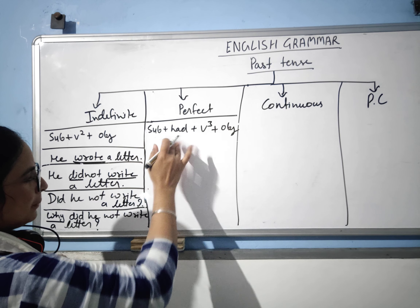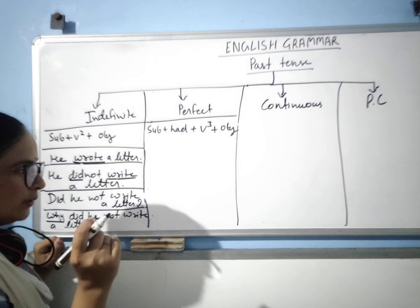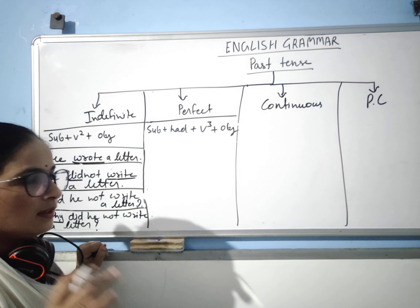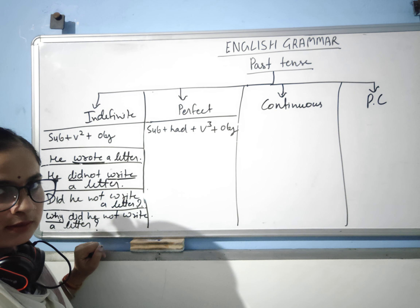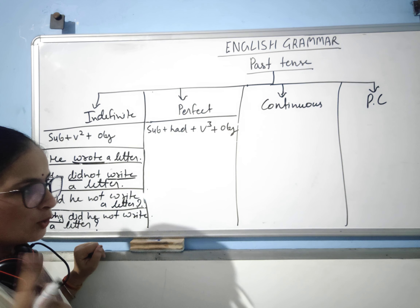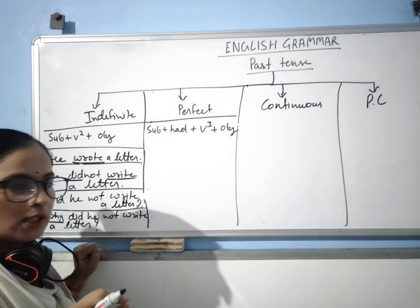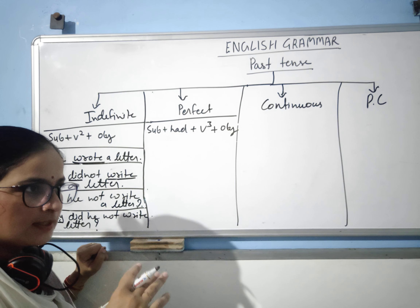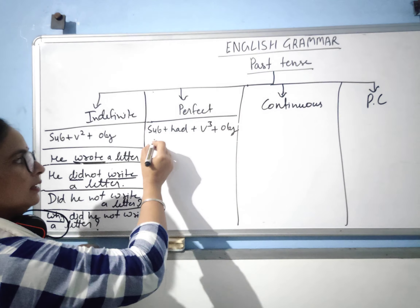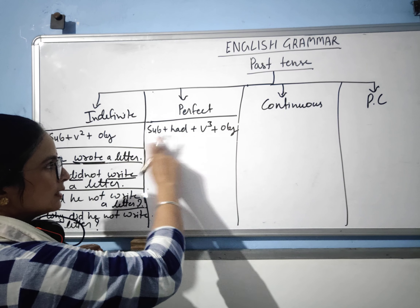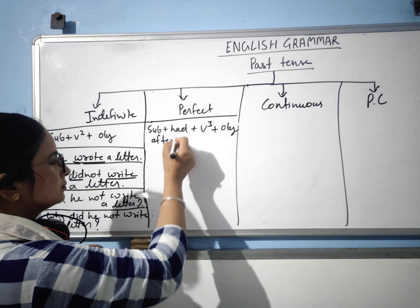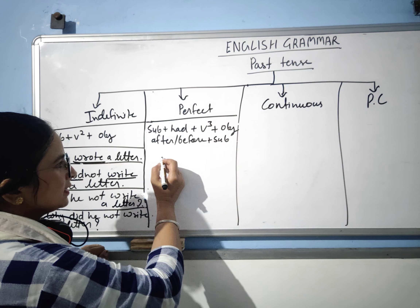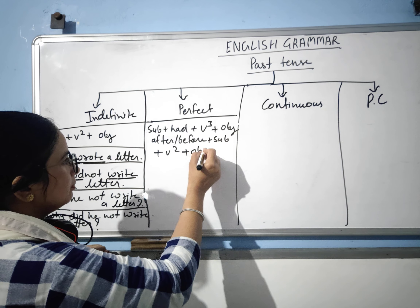Sometimes these sentences have two parts. The last sentence will come first and the first sentence will go last. The structure is: subject plus 'had' plus verb third form plus object, plus 'after' or 'before', and then the second sentence: subject plus verb second form plus object.